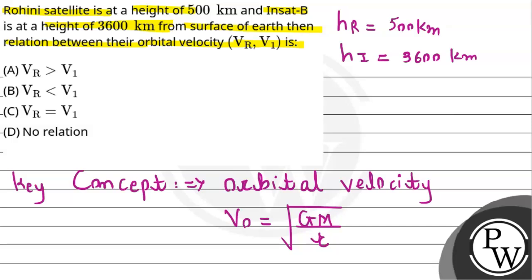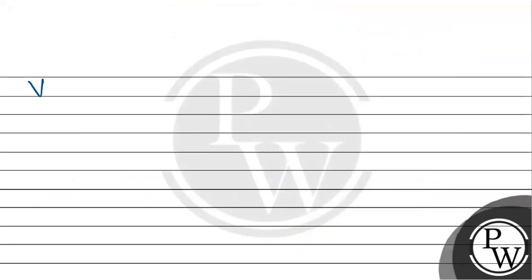So since we can see from the formula itself, orbital velocity with G constant and M mass constant, it will be inversely proportional to the under root of R. This is the distance.